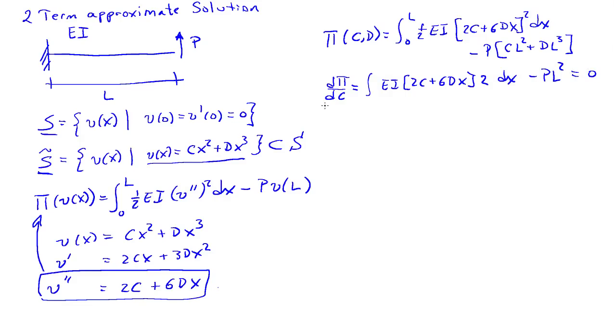Likewise, the derivative with respect to D, the integral of EI times 2C plus 6dx times 6x dx minus P L cubed, also equals zero.